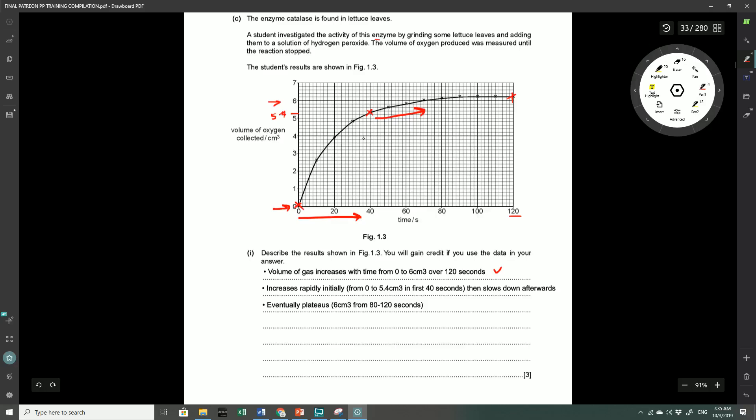Then it reaches this period where the graph plateaus out. Between 80 to 120 seconds, the volume of oxygen collected remains at around 6 cm³, suggesting that the graph has plateaued. So you can separate the graph into three segments: the initial rapid increase, the slowing down phase, and the plateau. Obviously support your claims with the appropriate data from the actual graph. Those are three very easy marks.